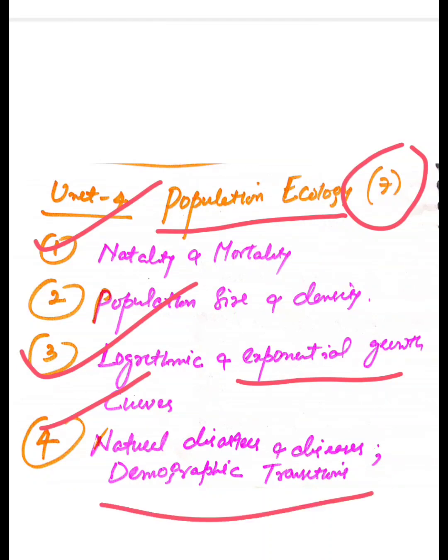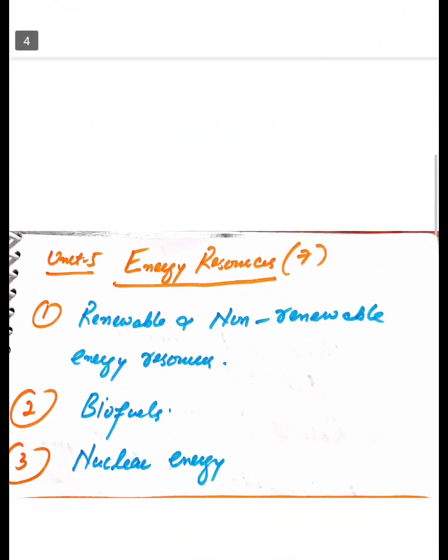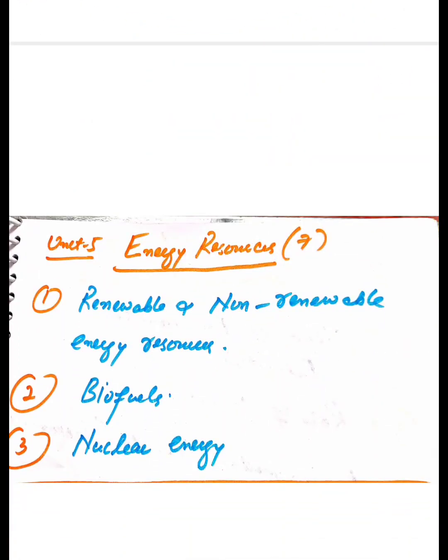Now coming to one more unit, that is Unit 5, Energy Resources. This will also be 7 marks. First question is what are renewable and non-renewable energy resources. You have to give examples and applications. Second one is what are biofuels.